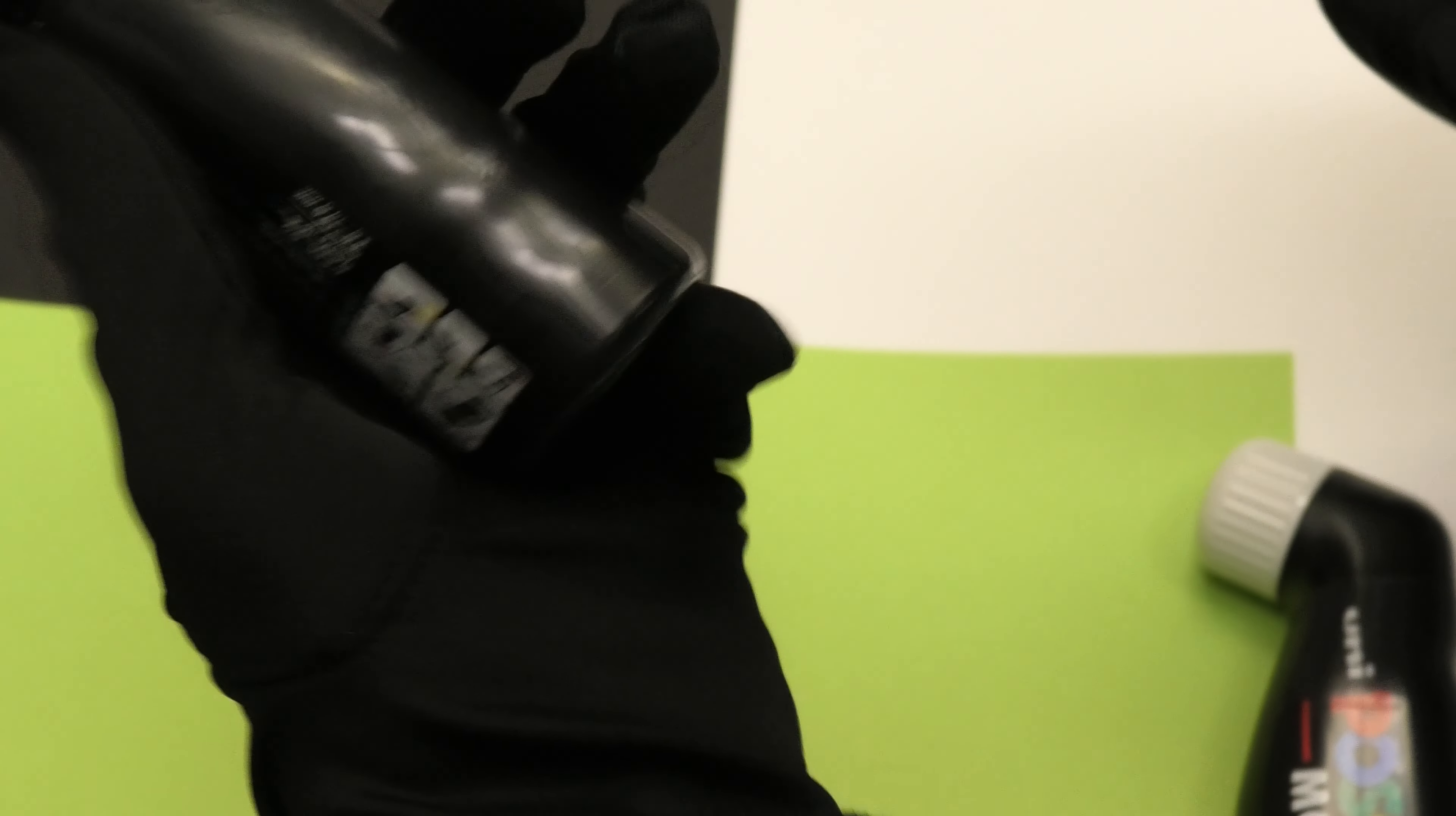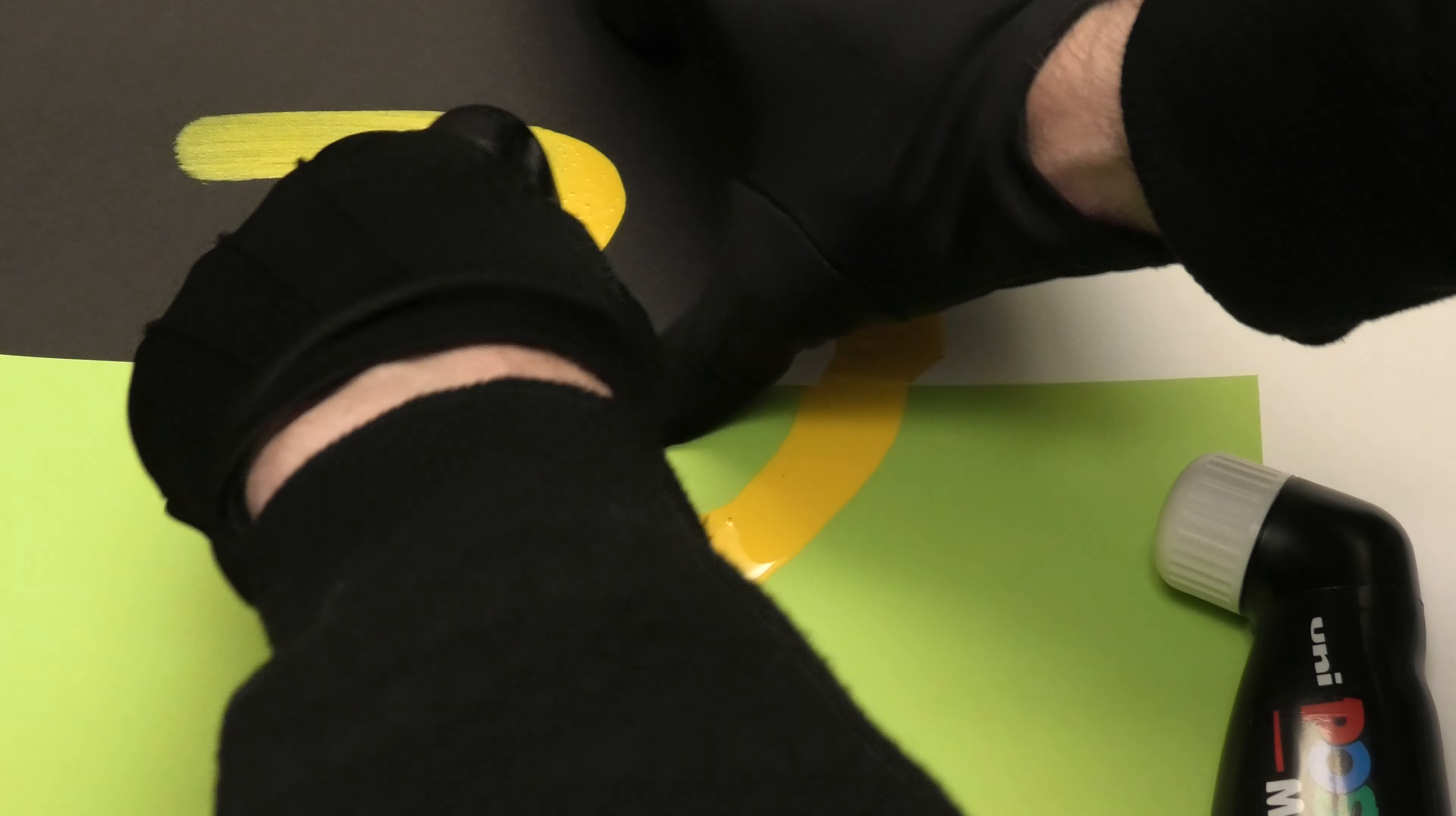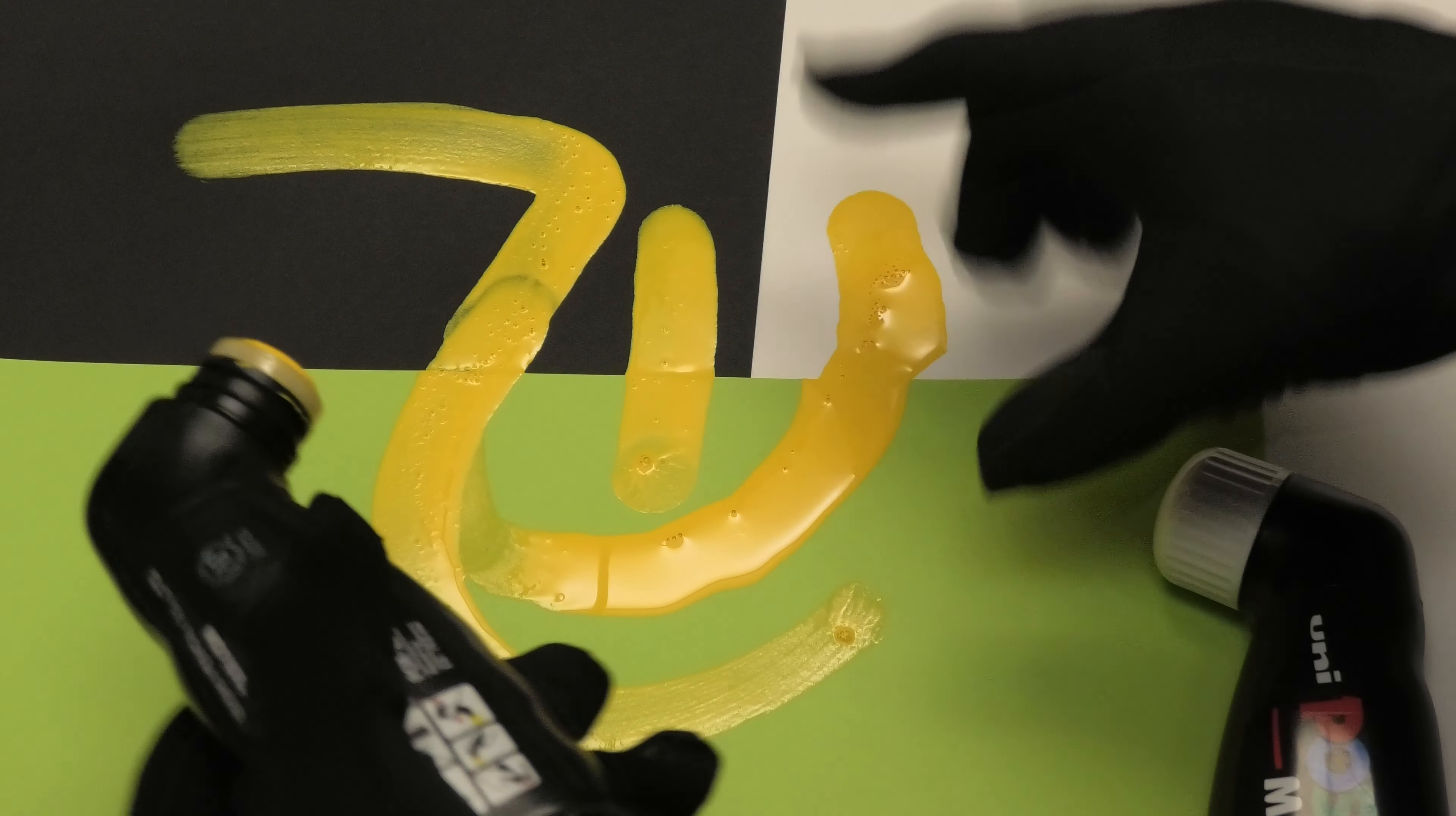So here is the wide sponge tip. Now squeezing a bit to get more paint flow coming through there. Squeezing ever so slightly. That's a pretty good line.